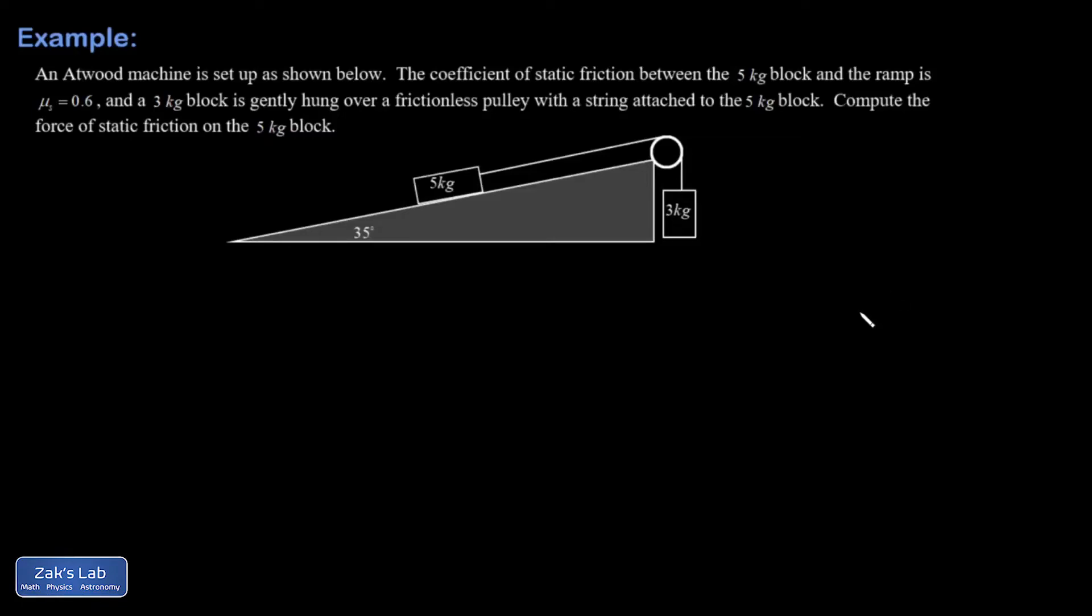All right, here we have an Atwood machine on an incline. I'm given a coefficient of friction that applies to this block over here, μs equals 0.6. And then I have a three kilogram block hung over this pulley, and everything is frictionless, and the string is light, so I don't have to worry about those complications. And I'm asked for the force of static friction on the five kilogram block.